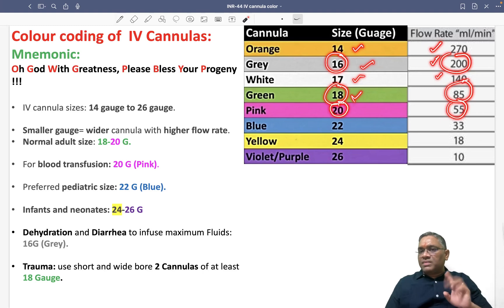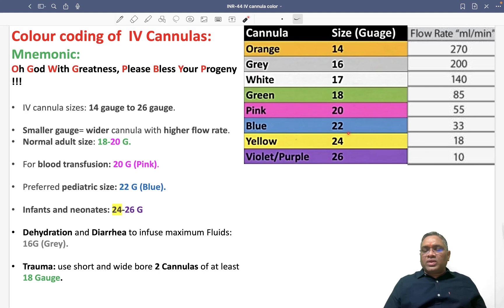The blue needle used in pediatric cases is 22g with a flow rate of 33 ml per minute. For infants and neonates where you use 24 and 26 gauge, the rate is 18 to 10 ml per minute - very minimum because they require less fluid.